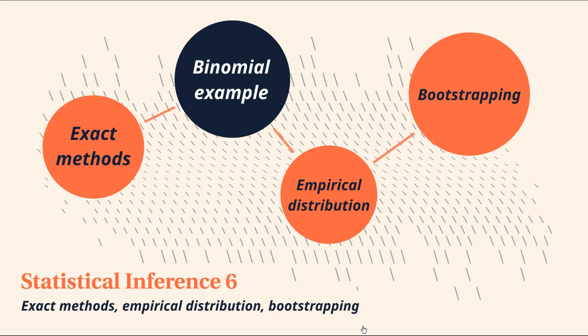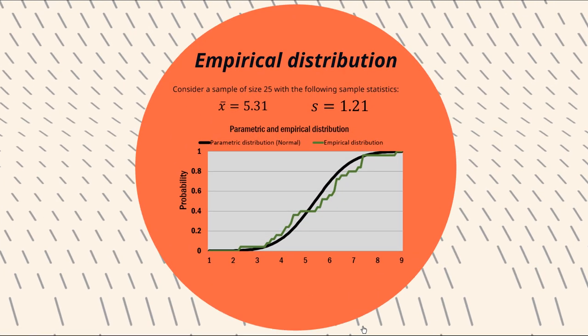Okay, so let's move on to the empirical distribution. So I've said here, let's consider a sample of size 25 with the following sample statistics. The mean being 5.31 and the standard deviation, that's the sample standard deviation, being 1.21.